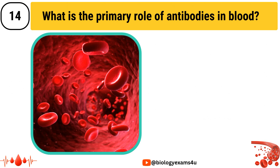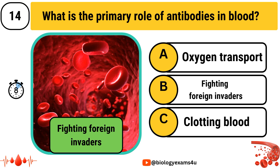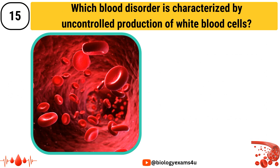What is the primary role of antibodies in blood? Option A: Oxygen transport, Option B: Fighting foreign invaders, Option C: Clotting blood. The answer is Fighting foreign invaders.